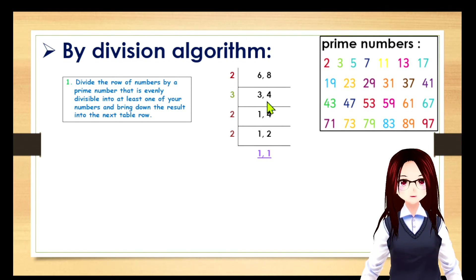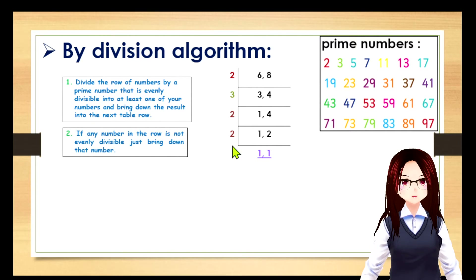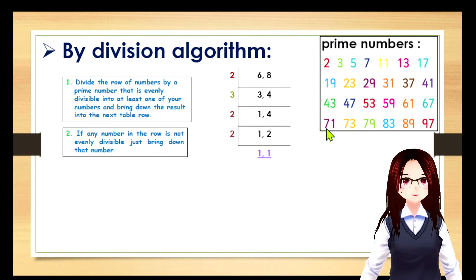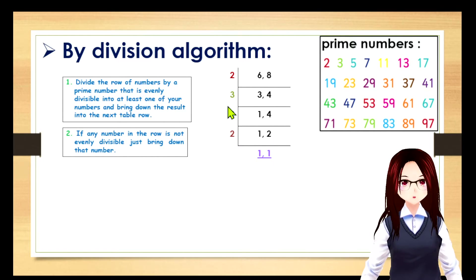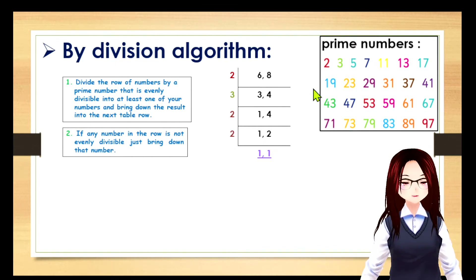Now we divide again by the next prime number. If any number in the row is not evenly divisible, just bring down that number. So 3 divided by 3 equals 1, and 4 divided by 3 — you cannot divide, so just bring down 4. Now we divide again by the prime number 2: 1 divided by 2, you cannot divide, so bring down 1, and 4 divided by 2 equals 2.